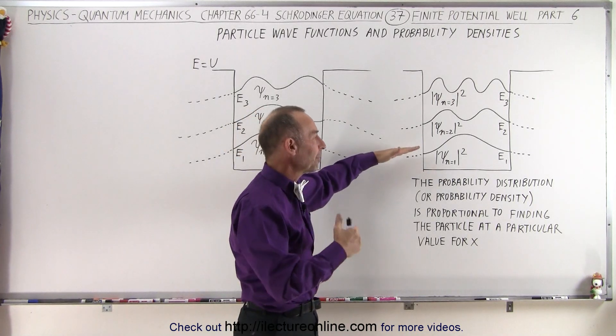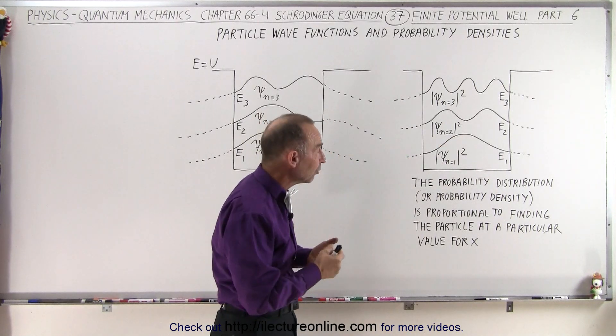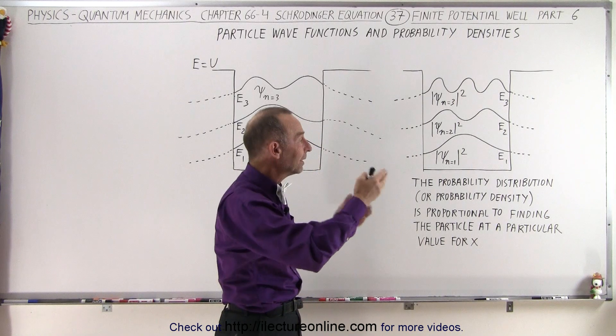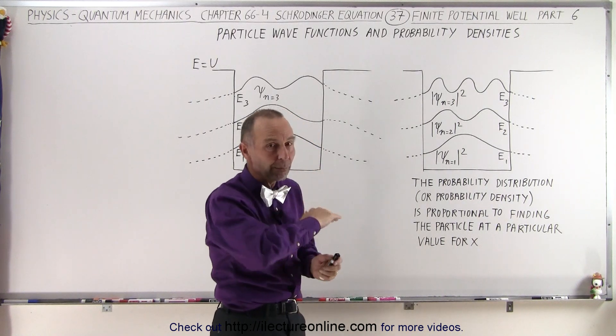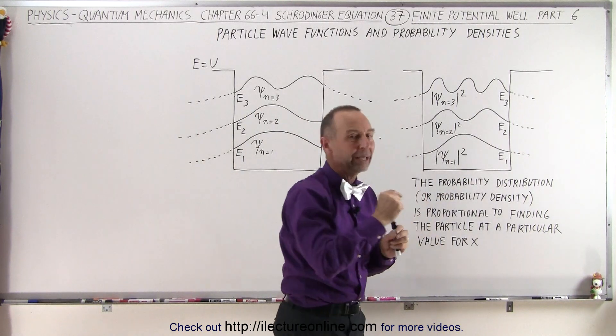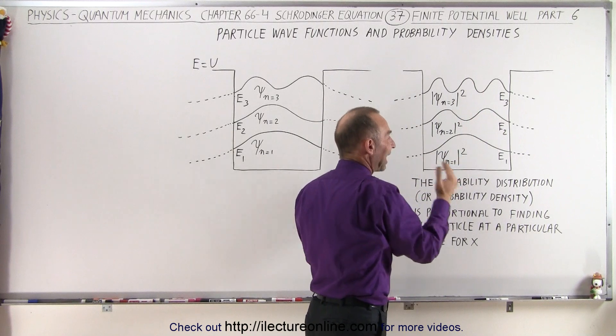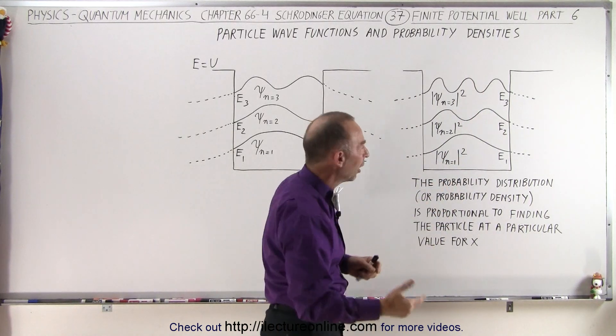In order to get the probability of a function within a certain region in a finite well like this, you have to actually normalize the function, integrate it and normalize it, so that when we integrate over the entire distance or the entire width of the well, it's equal to 1.